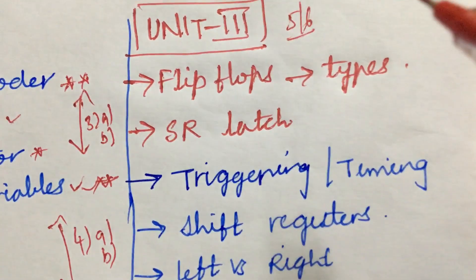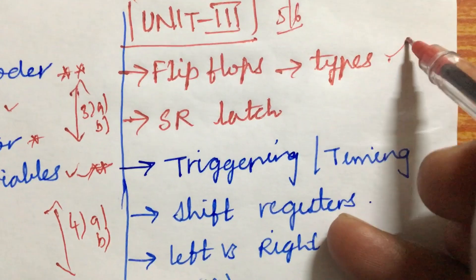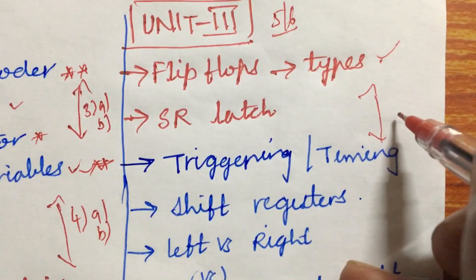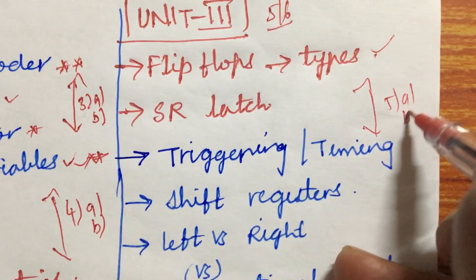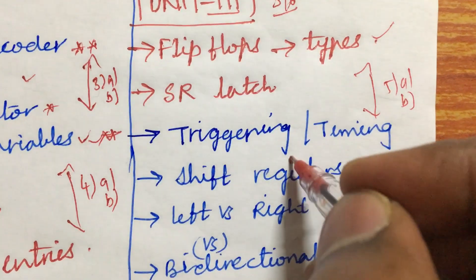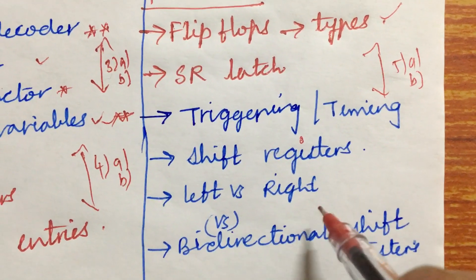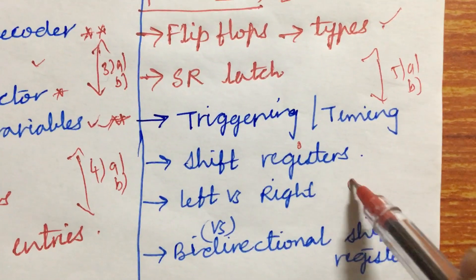Which I am going to let you know, all are the flip-flops and their types and SR latch and the trigger and timing. From this part you can expect 5A as well as 5B dear students. Later, the very important question is all about the shift registers related to left versus right or bi-directional register, may be one of the 6A questions.